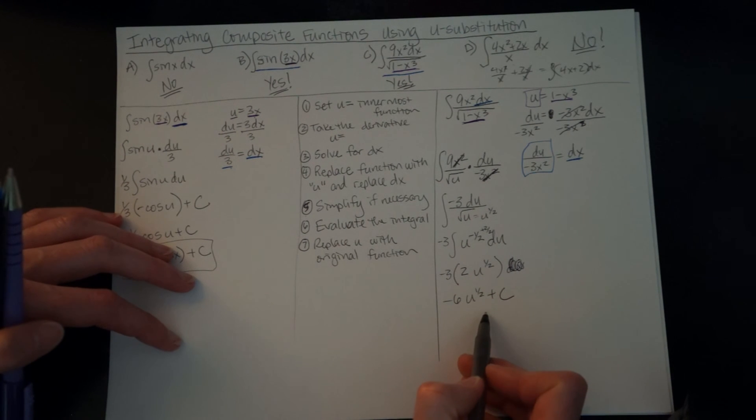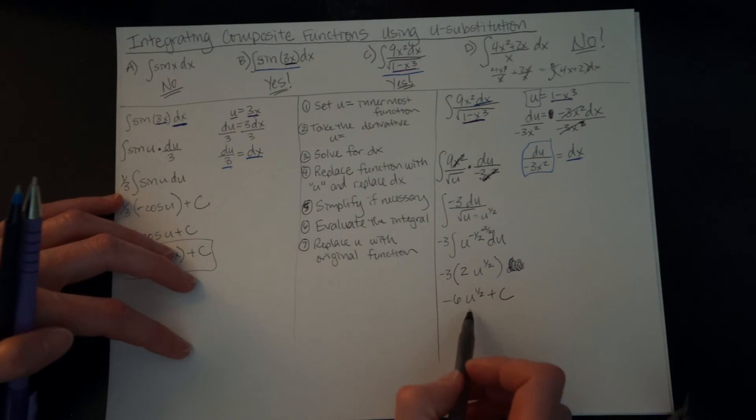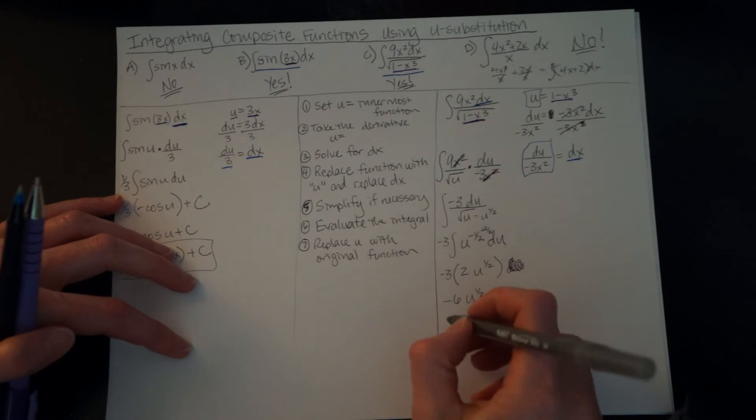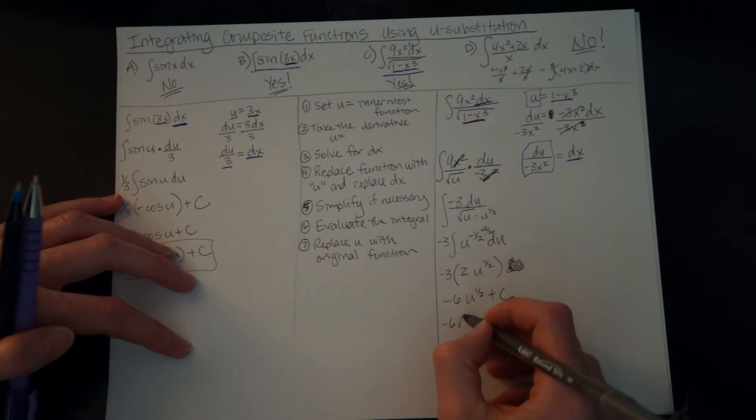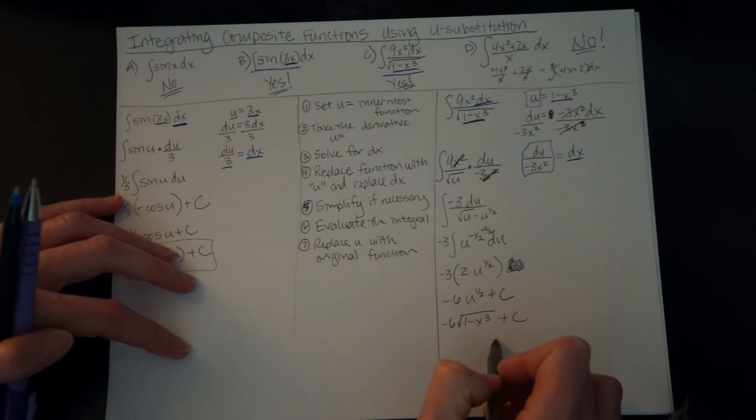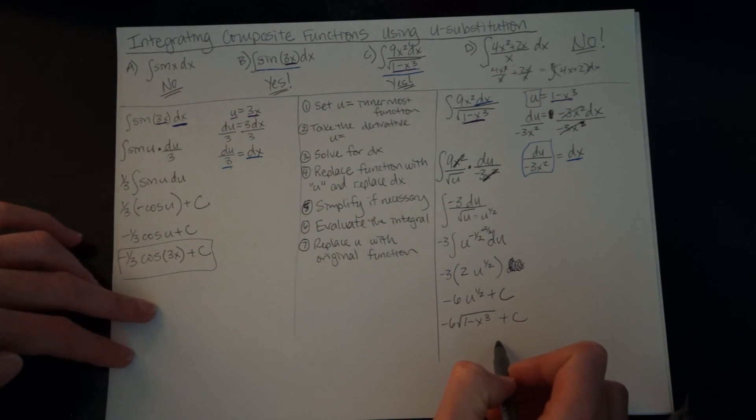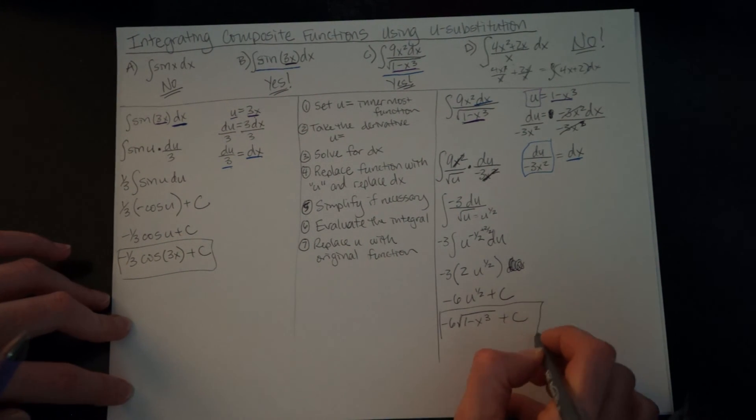So once I've gotten to here, am I done? No, because I've got this u here still. So I've got to go all the way back up here and see that u is equal to 1 minus x³ and plus c. And notice I changed the one half back to the radical sign. Most instructors will want you to do it that way. So that's our final answer for this.